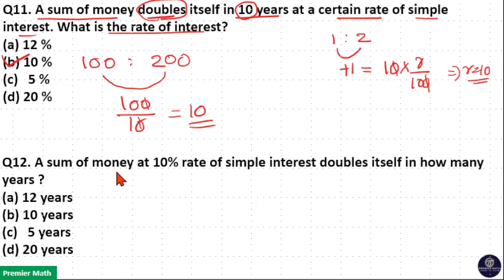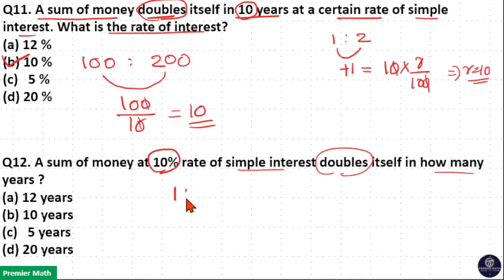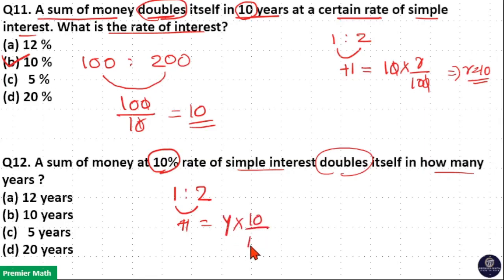For the second question — a sum of money at 10 percent rate of simple interest doubles itself in how many years — I invested 1 rupee and got 2 rupees. The increment is 1 unit, that is 1 rupee. This 1 rupee was received in Y years at a rate of 10 percent.